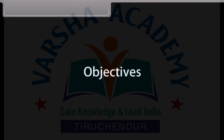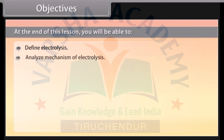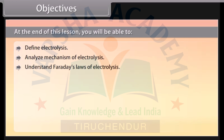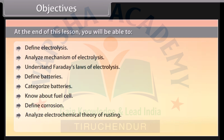Objectives. At the end of this lesson, you will be able to: Define electrolysis; Analyze mechanism of electrolysis; Understand Faraday's laws of electrolysis; Define batteries; Categorize batteries; Know about fuel cell; Define corrosion; Analyze electrochemical theory of rusting; and Explain prevention of corrosion.